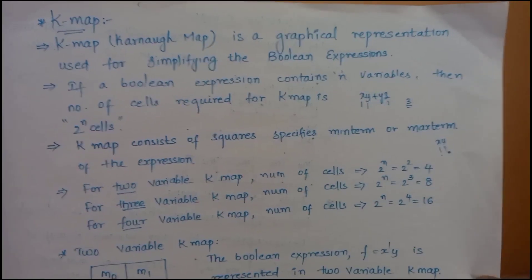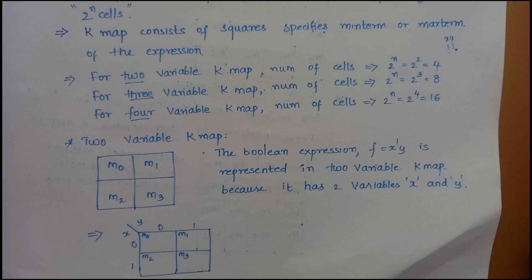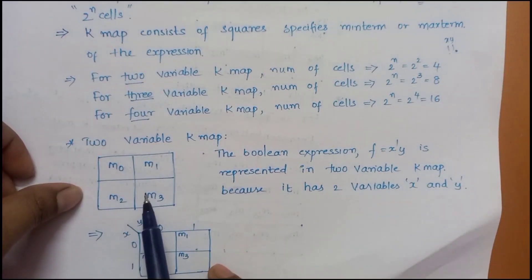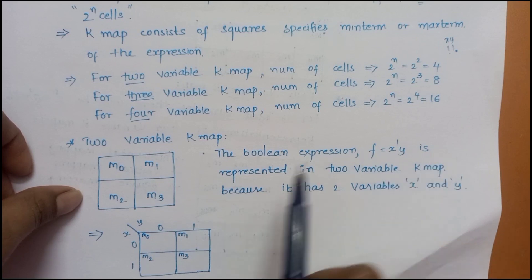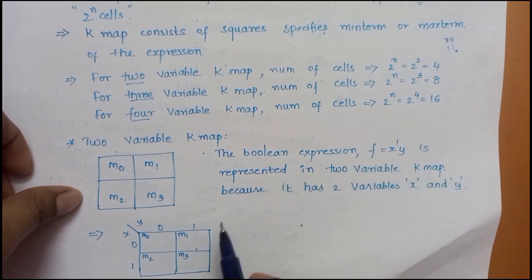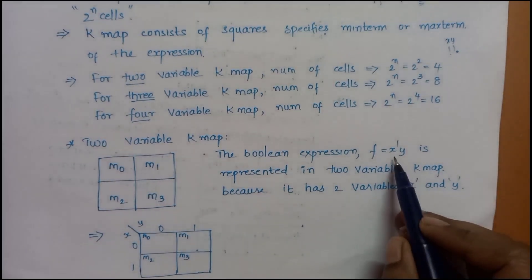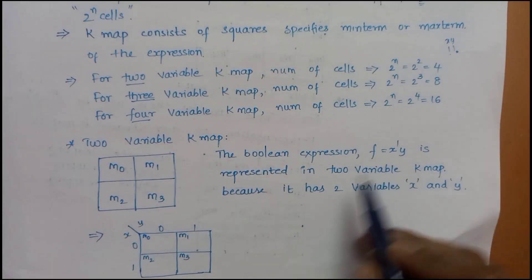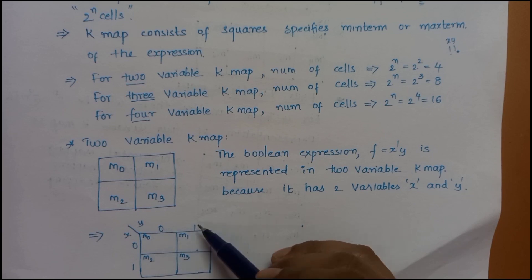What is a 2-variable K-map? In a 2-variable K-map, the number of cells required is 4. Consider the boolean expression F equal to x-dash y — it is represented in a 2-variable K-map because it has 2 variables x and y. Since there are 2 variables, 2^2 equals 4 cells are required.